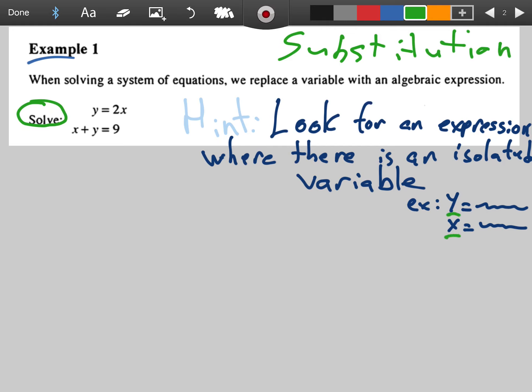So one hint that I've sketched out here is to look for an expression where there is an isolated variable. For example, where y equals something or x equals something. In this scenario seen here, out of these two equations, which one of these is already isolated for some variable? Hopefully you're saying y equals 2x.